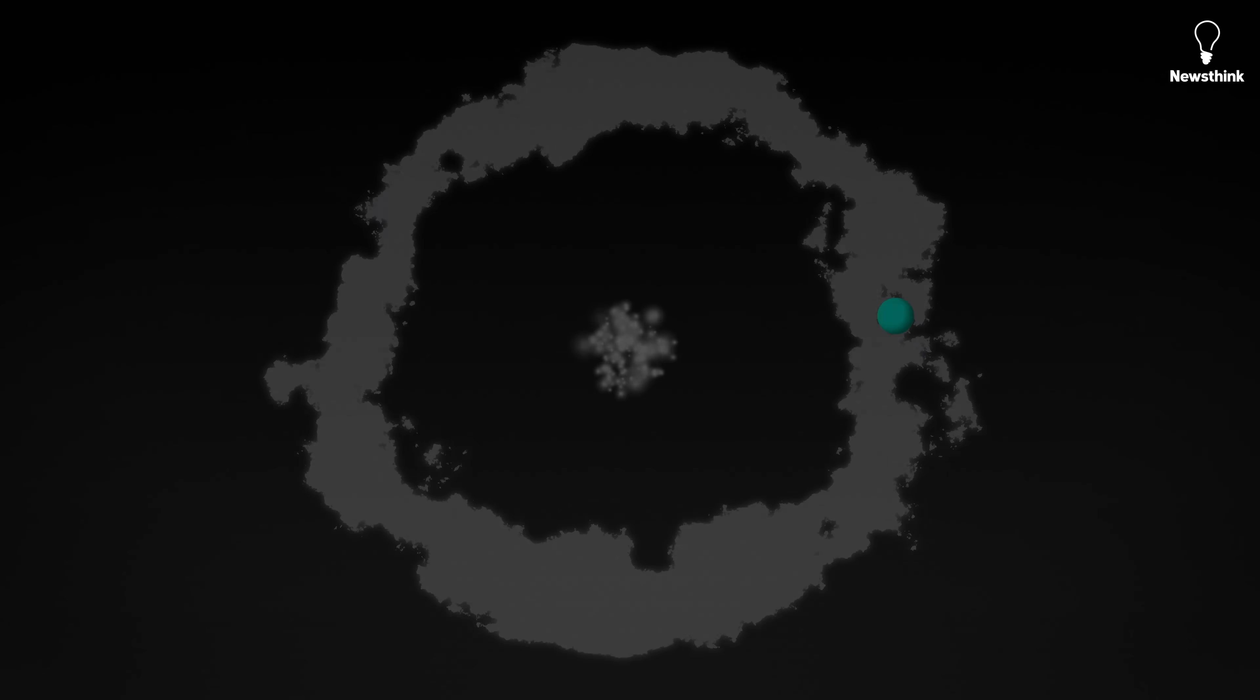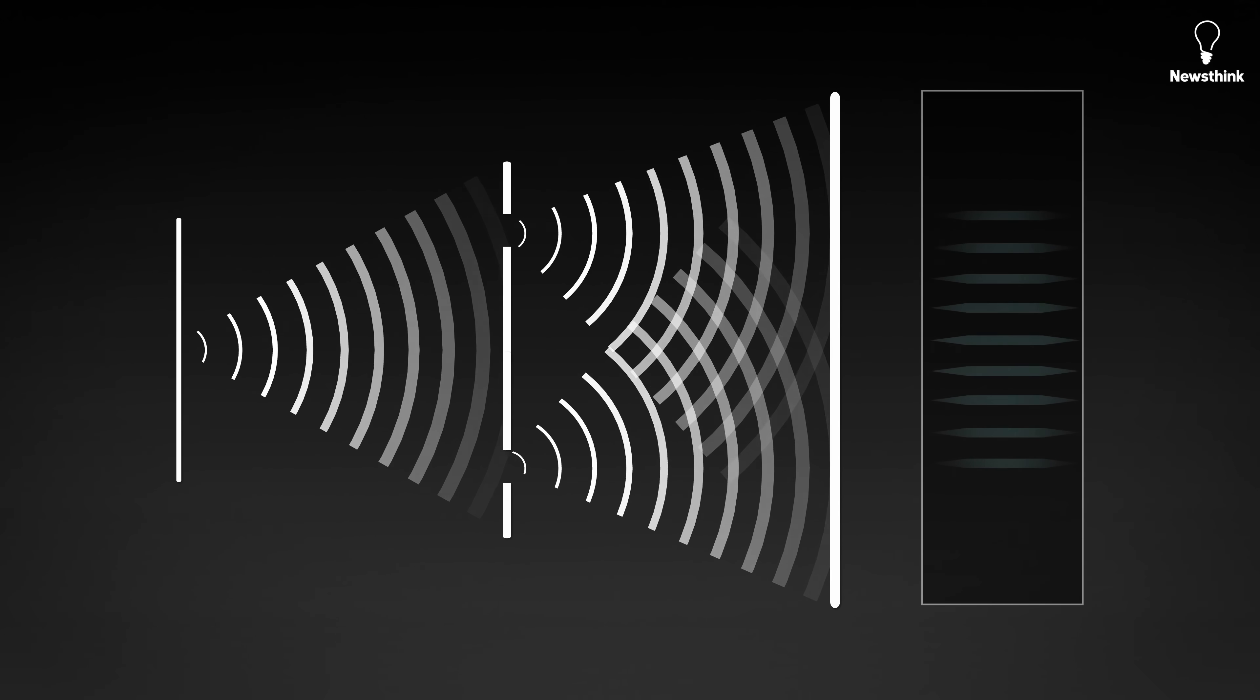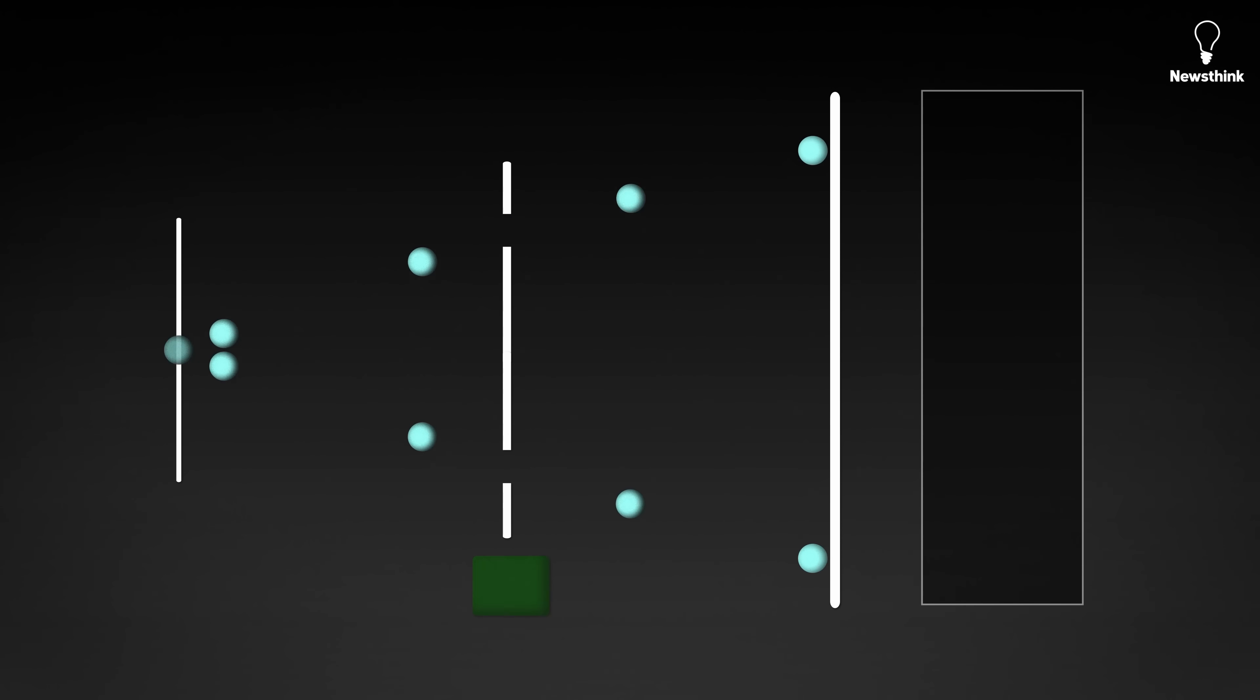Then there's the double-slit experiment, one of the strangest experiments in science. If you fire photons or electrons at two slits, you might expect them to behave like bullets, forming two bands on the screen depending on which slit they go through. Instead, they form an interference pattern because the particles behave like a wave, passing through both slits simultaneously and interfering with itself, even when the particles pass through one at a time. Then it gets even stranger. The moment you set up a detector to measure which slit a particle actually goes through, the interference disappears. The photons or electrons suddenly behave like particles again, producing only two bands. The mere act of observation changes the outcome.